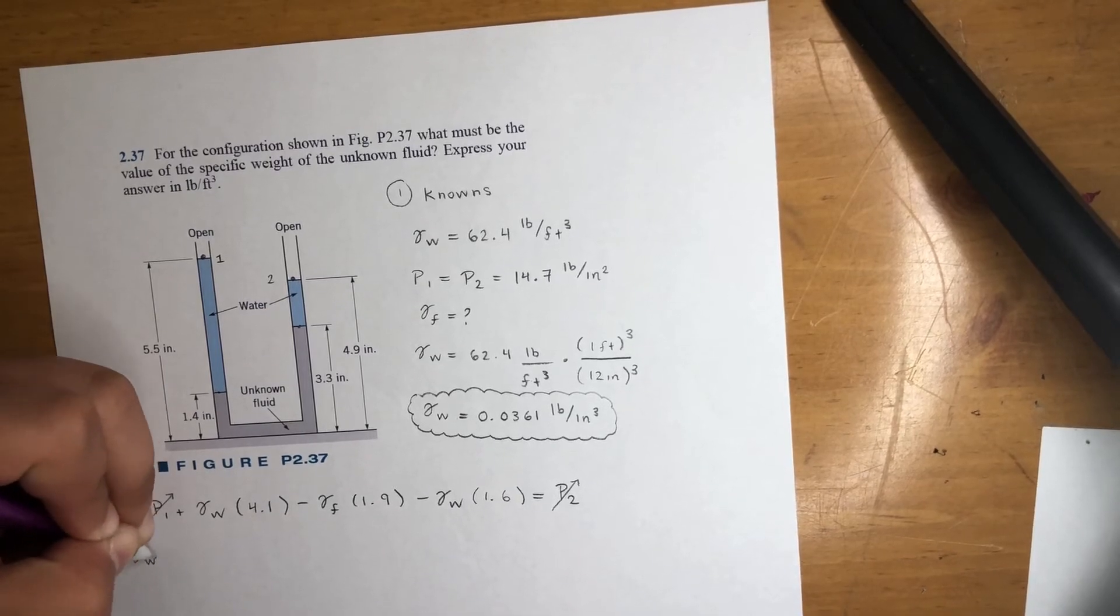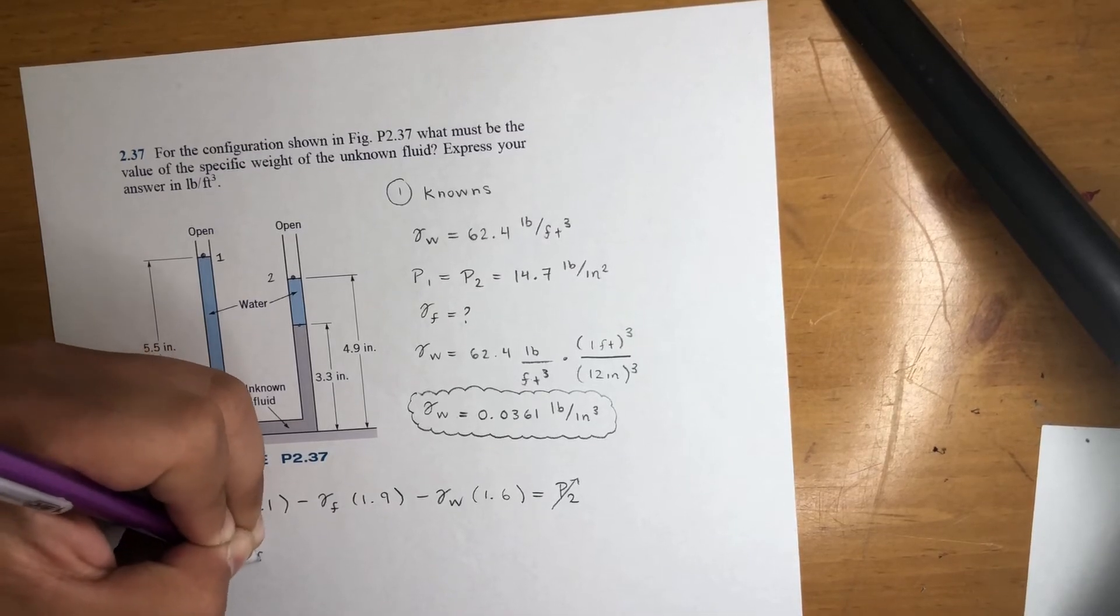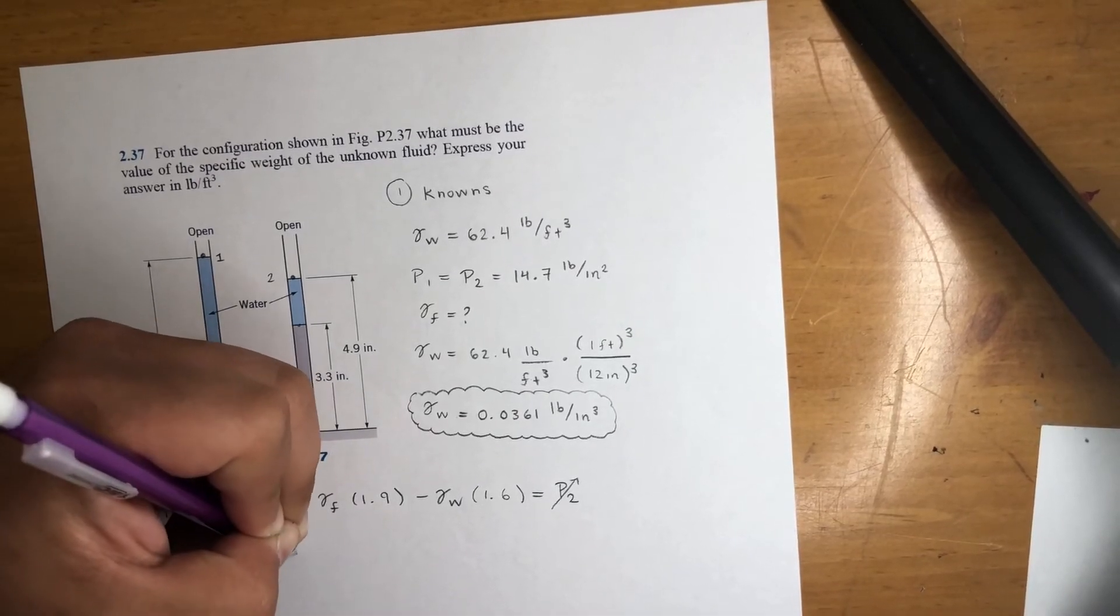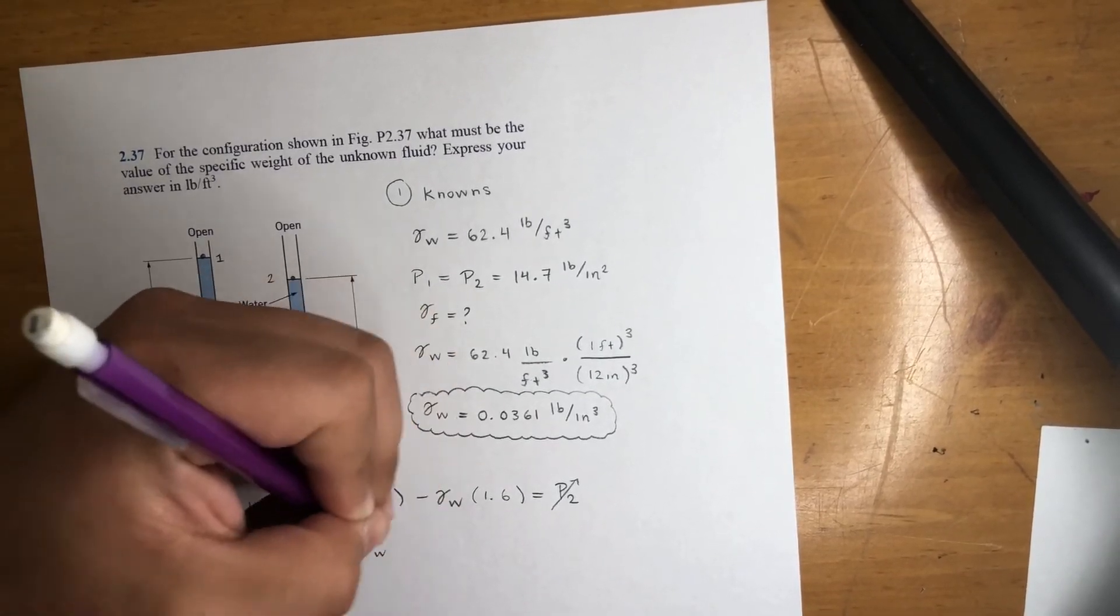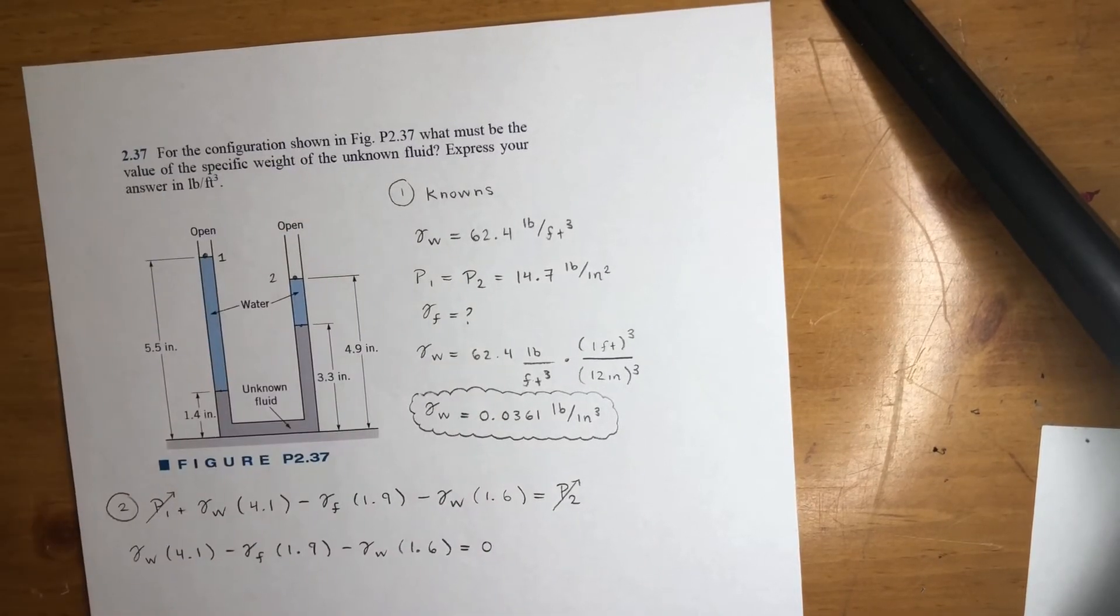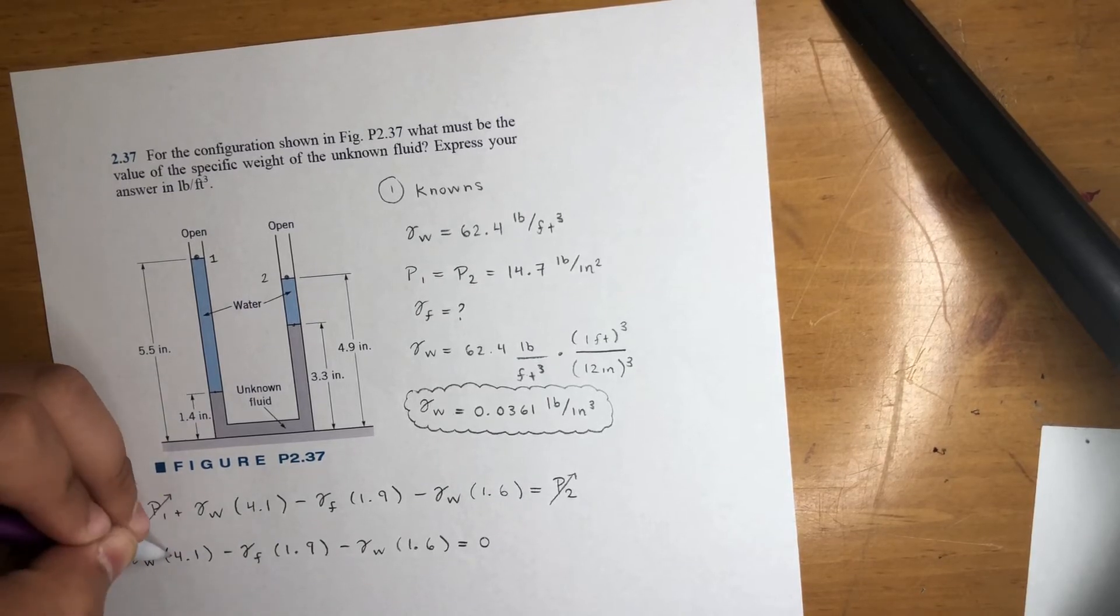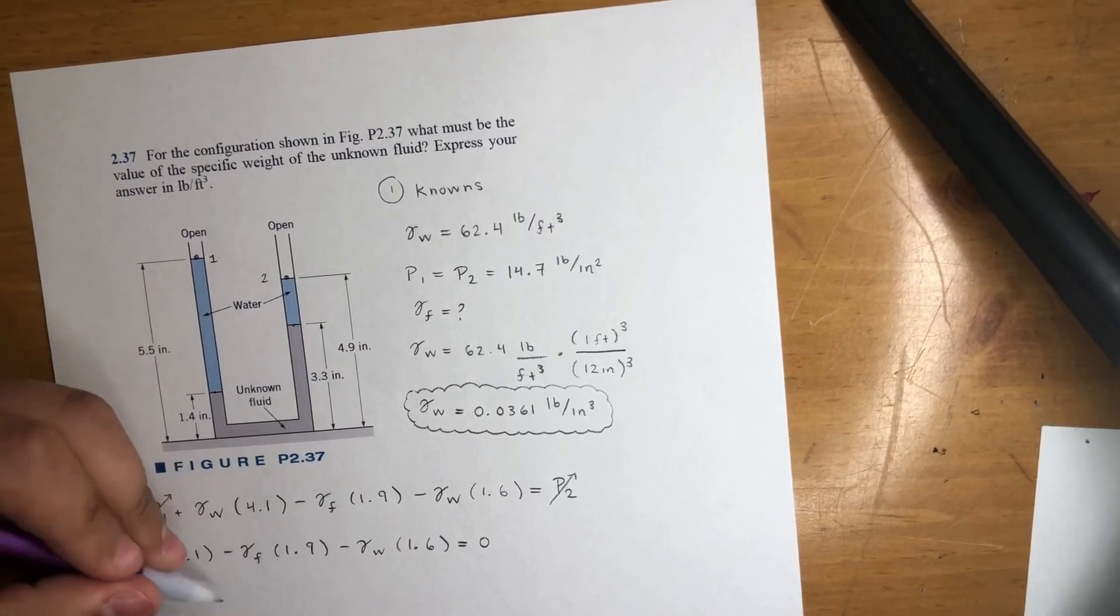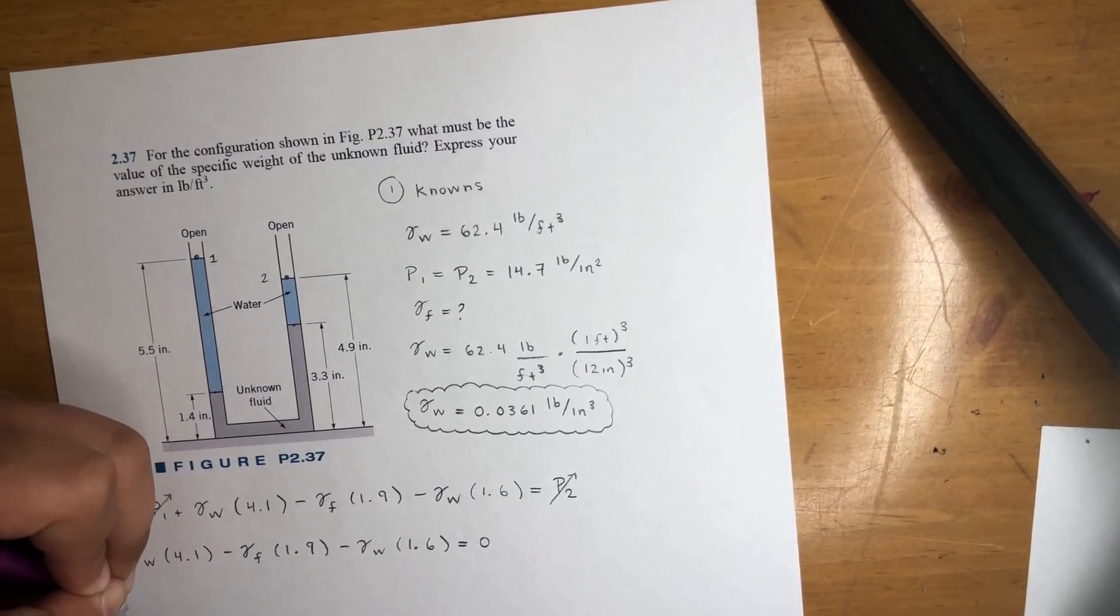Let's go gamma of water times 4.1 minus gamma f times 1.9 minus gamma w 1.6 is equal to zero. All right, so you can make things easier, right, factor out a gamma w. 4.1 minus gamma f minus this one. I don't like to do that. I've gotten confused, so ever since I remember a couple years ago for an exam that messed me up, so ever since then stop doing that. Zero.